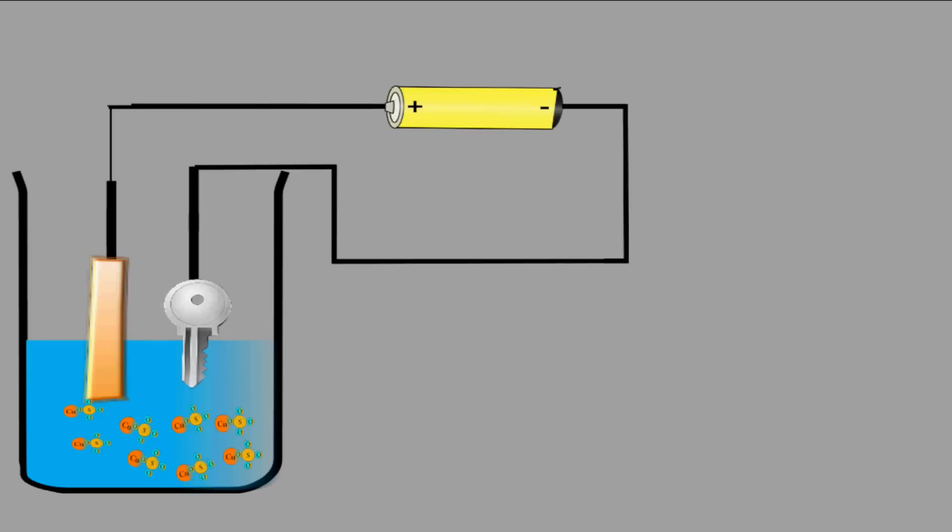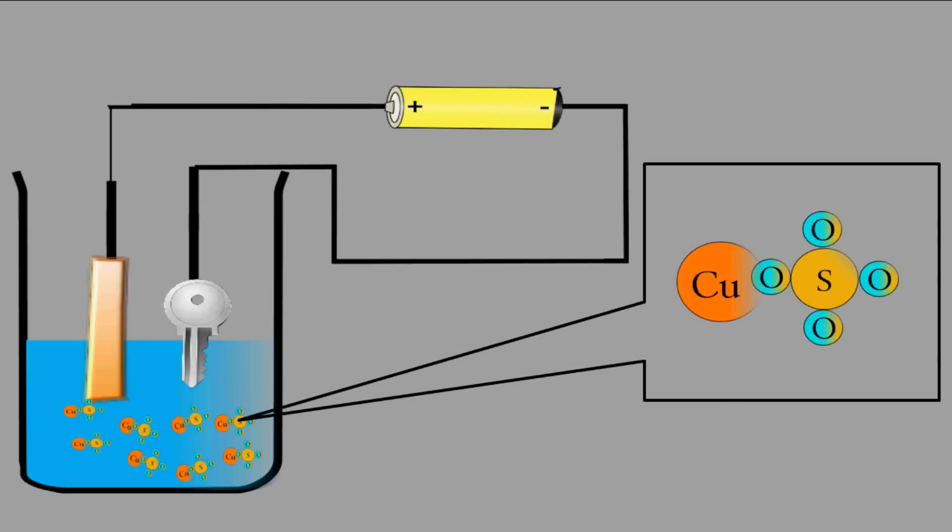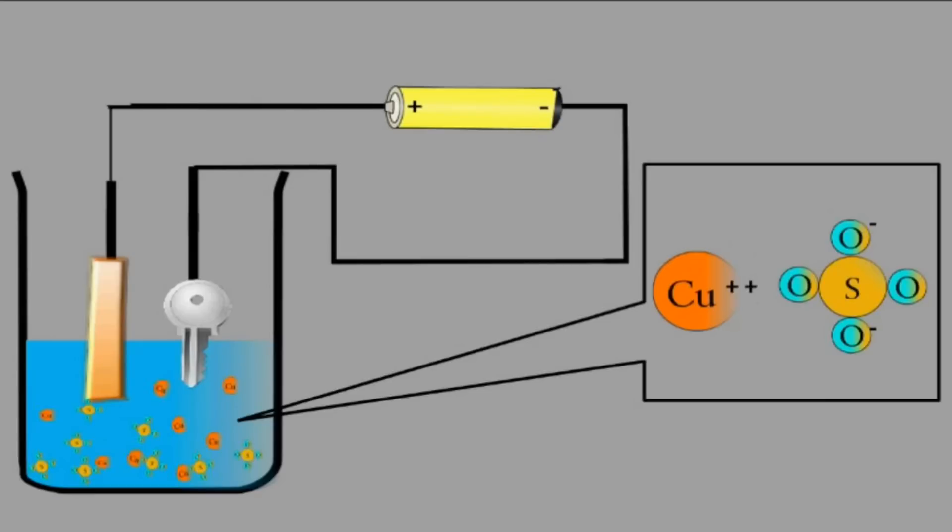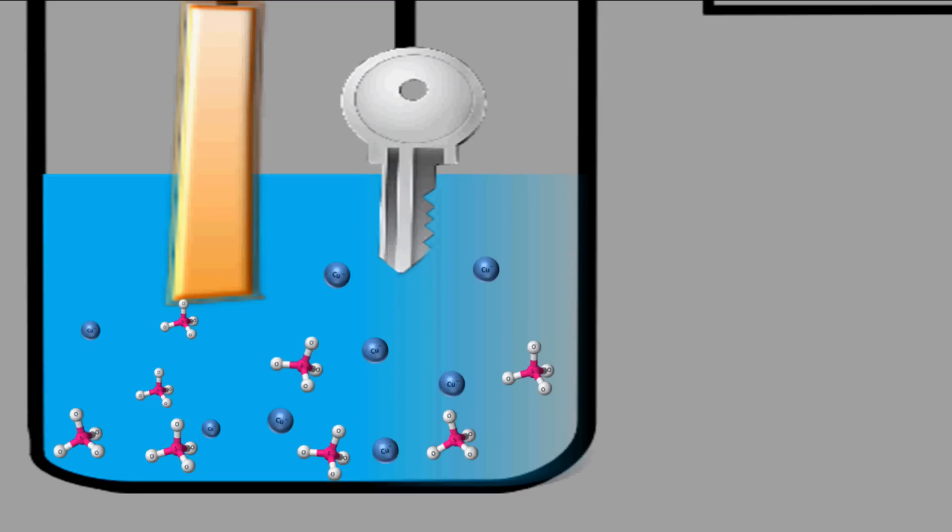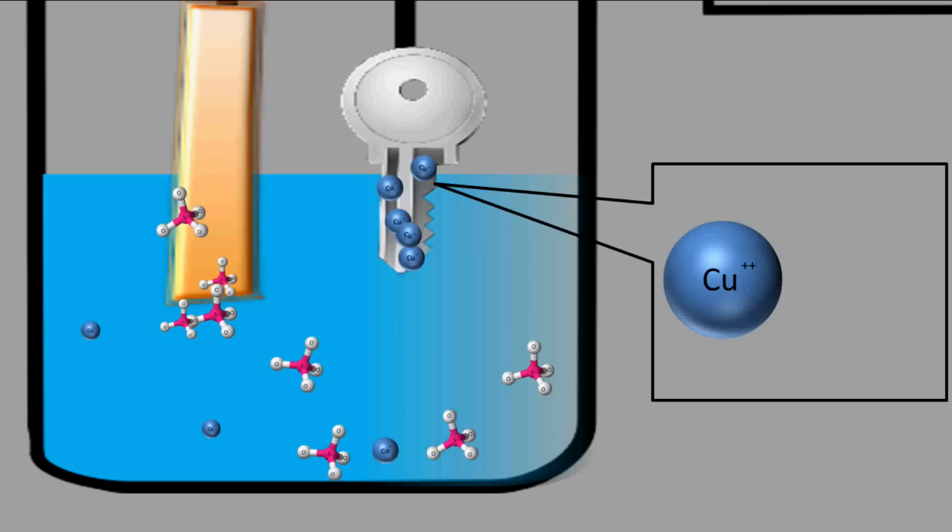Now let's see how electroplating works. When electricity passes through the copper sulfate solution, copper sulfate molecules break down into copper and sulfate ions. Now copper ion which is Cu++ gets attracted to the negative electrode. Here the negative electrode is the key.